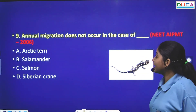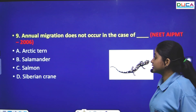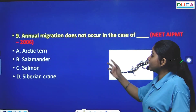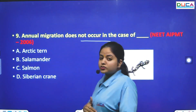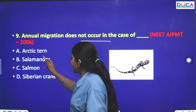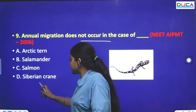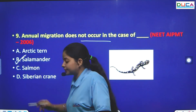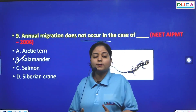The next question: Annual migration does not occur in which case? The options are Arctic tern, salamander, salmon, or Siberian crane. The answer is salamander — salamander does not show annual migration.